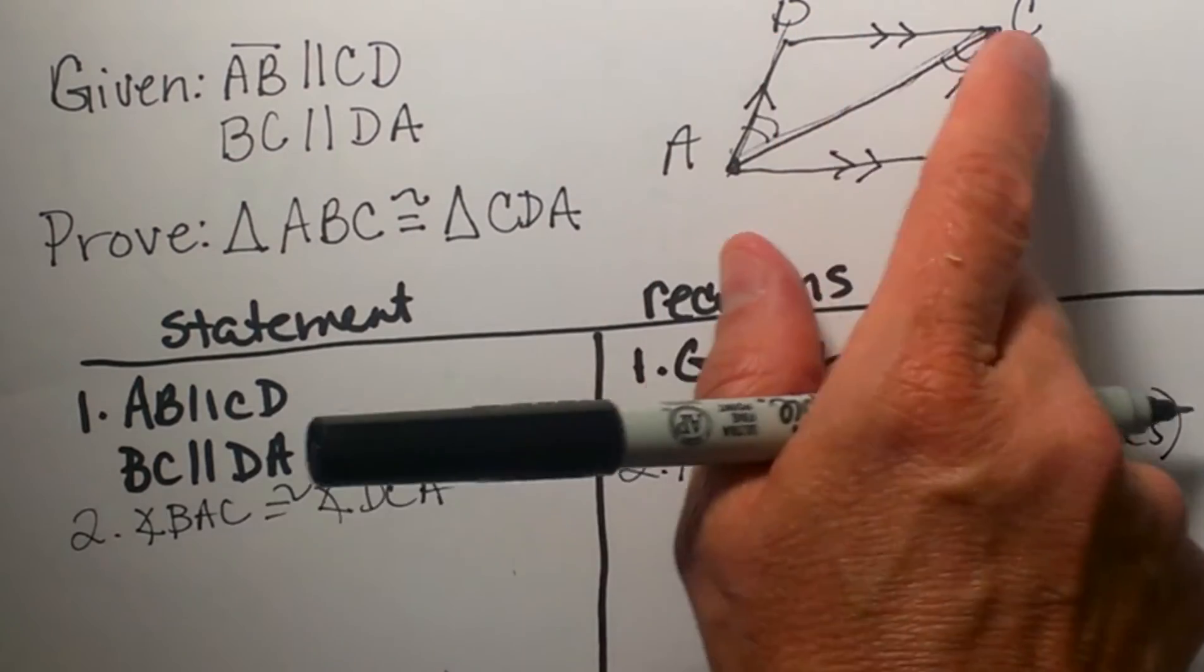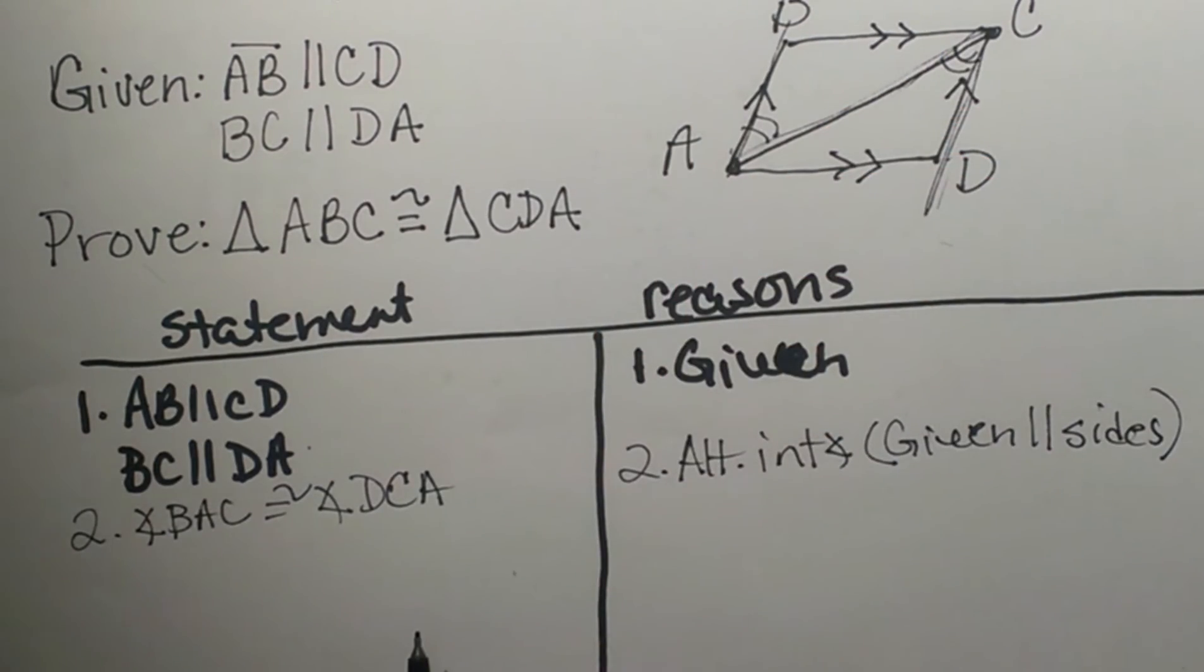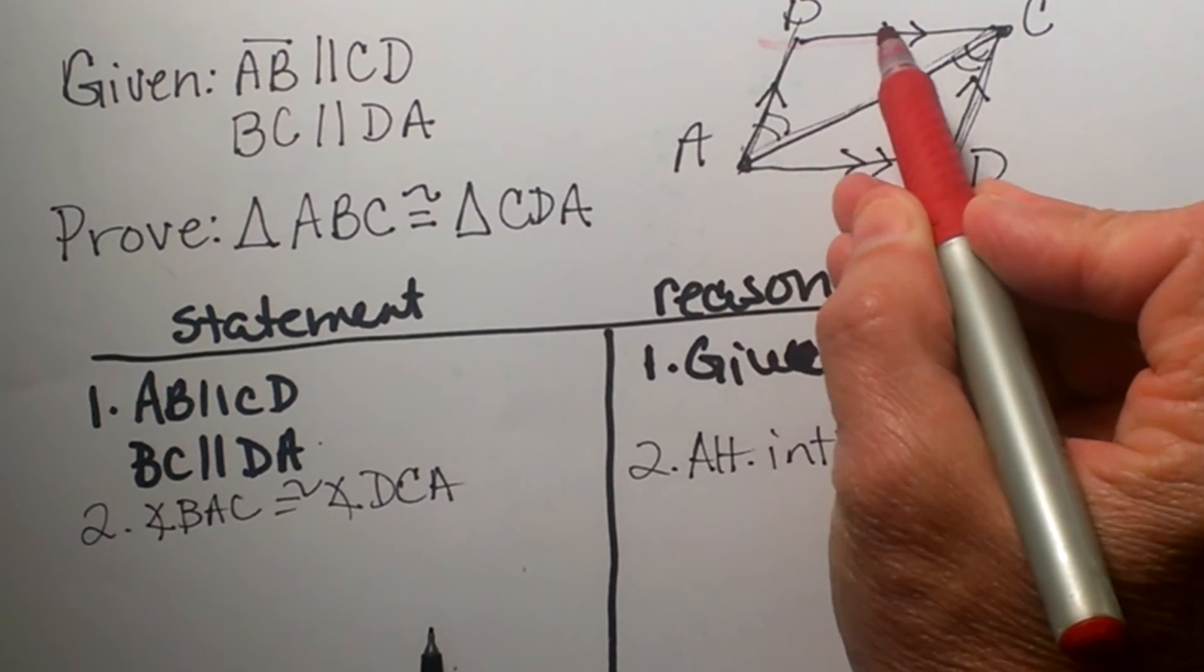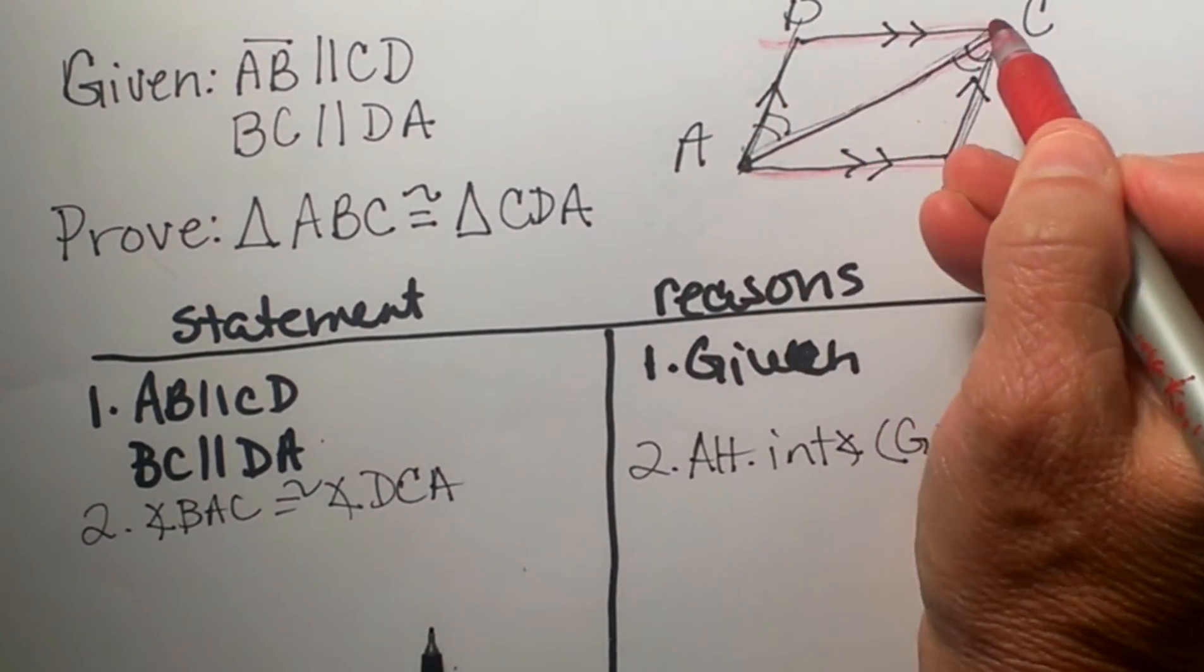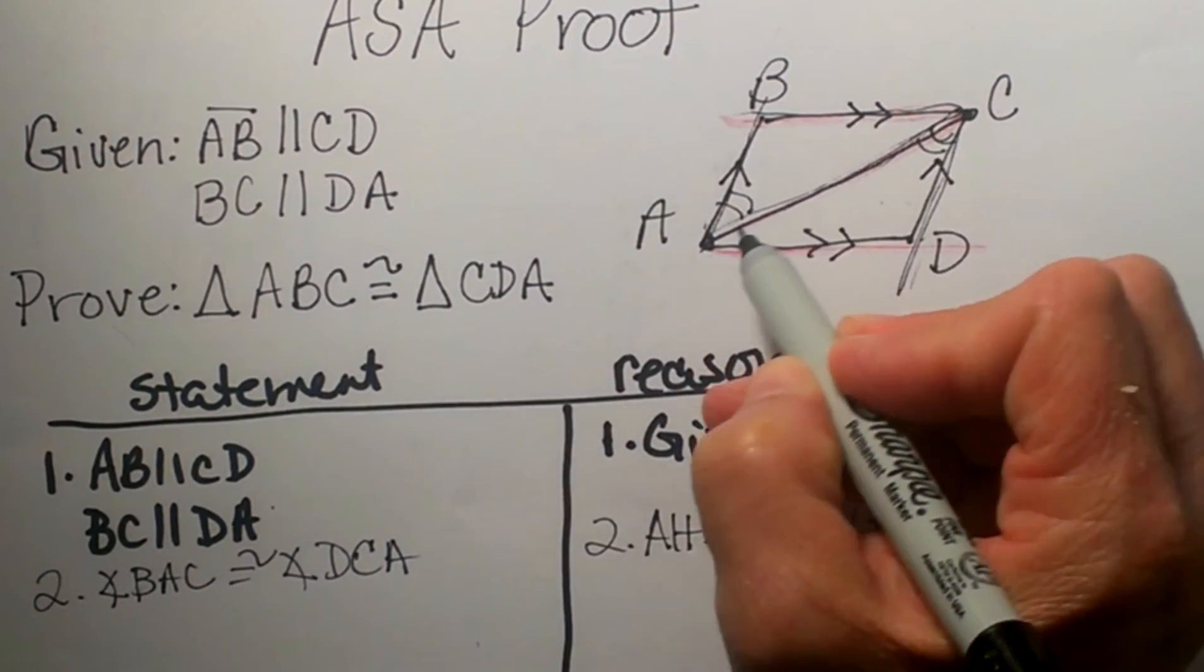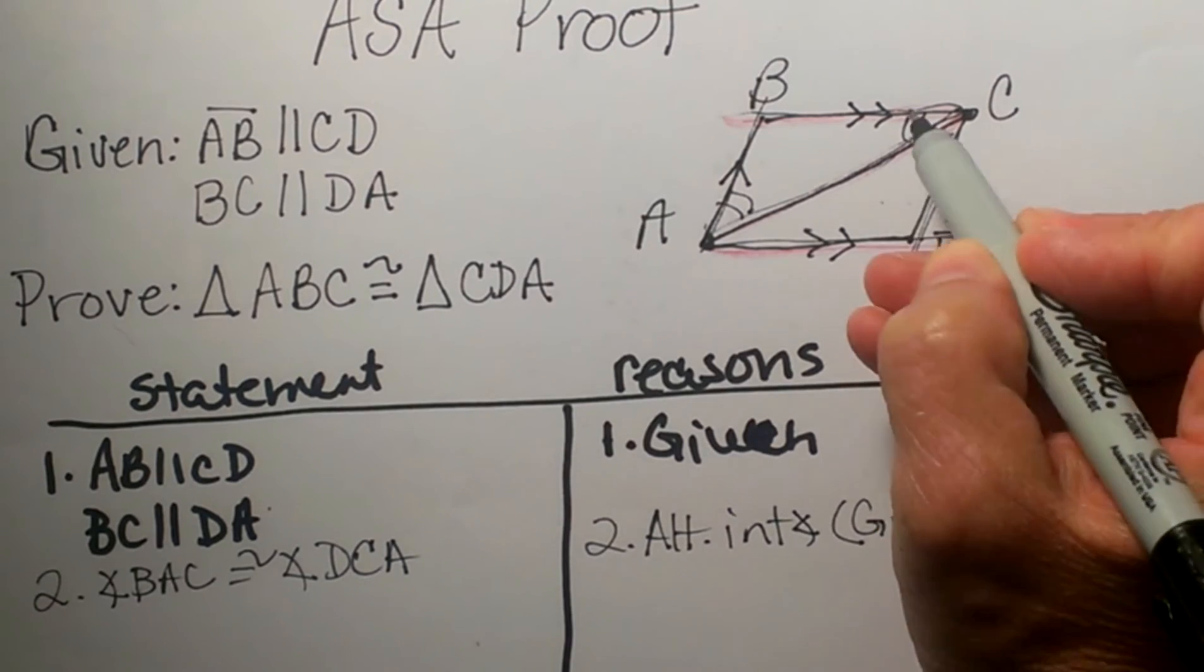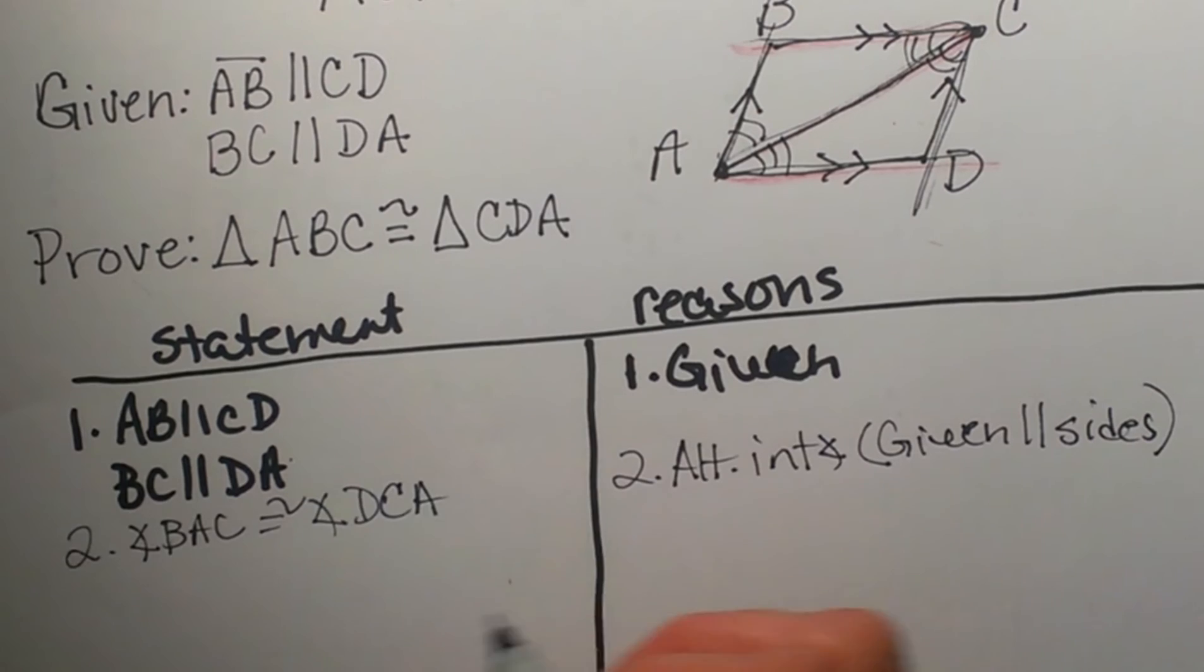We are going to use BC and DA to do the same thing but this time I am going to draw it in a different color so you can see it. If I draw this way you can actually see a Z. In red right there and this Z right here gives me these two tucked in angles. And they are going to be congruent because they are alternate interior angles.